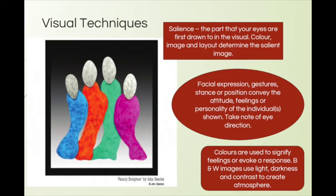Colour can affect salience, as can the size and layout of the image. In terms of this family painting, with nothing in the background or foreground, the salient object we're drawn to is this group of people. For some people, maybe the red person stands out most because that's the colour that grabs their attention; the person next to you might look at the green figure. So there can be slight differences in salience — there's not always a right or wrong answer.